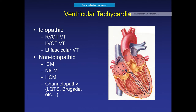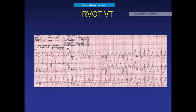Coming to the most common wide QRS tachycardia — ventricular tachycardia — it can be of various types. The most common idiopathic types are RVOT VT, LVOT VT, and fascicular VT. Non-idiopathic types include ischemic, non-ischemic, hypertrophic cardiomyopathy, and channelopathies.